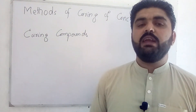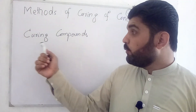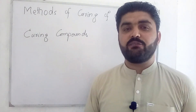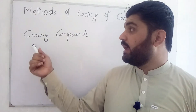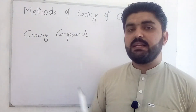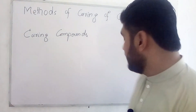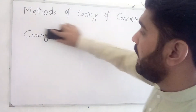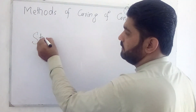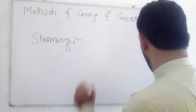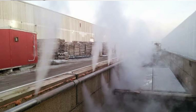The fourth method is the curing compound method. In this method, we apply a chemical compound on the fresh concrete surface to minimize heat loss. The fifth and last method is the steaming method, in which the concrete is subjected to steam under pressure so that heat loss is minimized and strength development is accelerated.